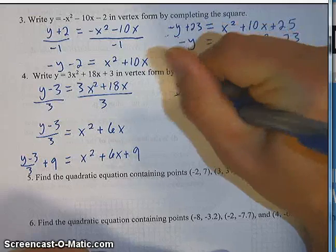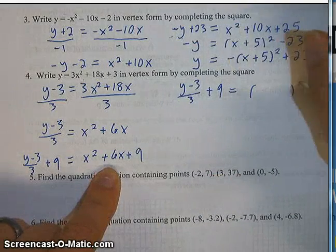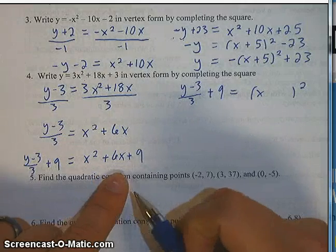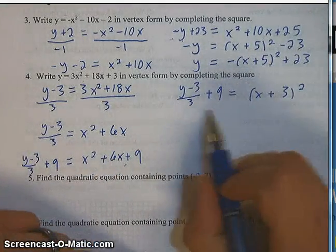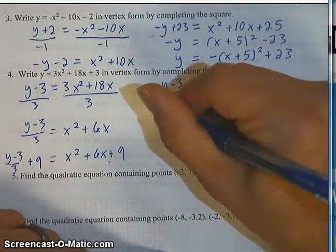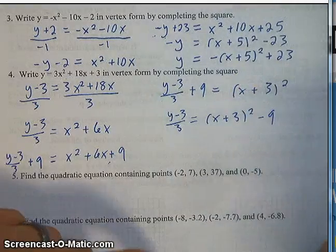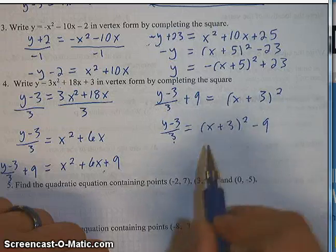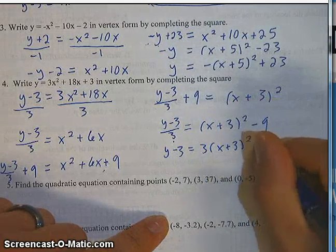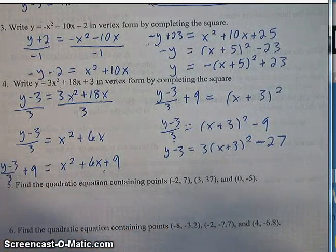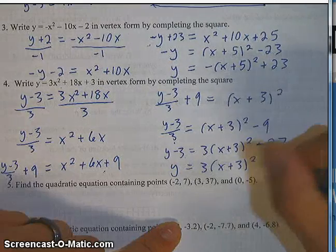So it's x squared plus 6x plus 9. Over here I've got y minus 3 over 3, and I've got to add a 9 next to it. I can write the left side the fancy way as x plus 3 squared. Now I start trying to get the y by itself — subtract 9 to the other side. I've got y minus 3 over 3 equals x plus 3 squared minus 9. I want to get rid of that denominator of 3, so I multiply both sides by 3: y minus 3 equals 3 times x plus 3 squared minus 27. Last step: add 3 to both sides. That's y equals 3 times x plus 3 squared minus 24.